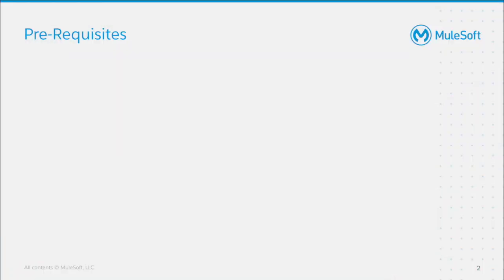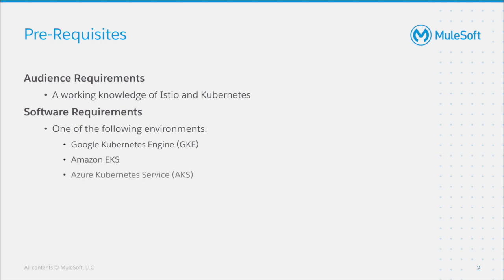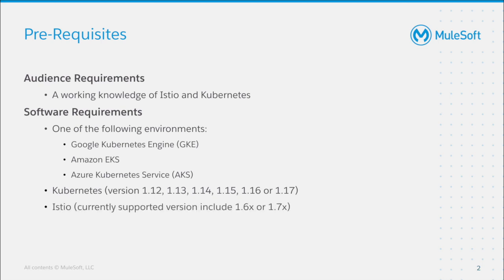In terms of audience requirements, you'll need to make sure you have a working knowledge of Istio and Kubernetes to use Anypoint Service Mesh. In terms of software requirements, you'll need to use one of the following environments: Google Kubernetes Engine, Amazon EKS, or Azure Kubernetes Service. You'll also need Kubernetes in one of the supported versions, and Istio — we currently support versions 1.6 and 1.7.